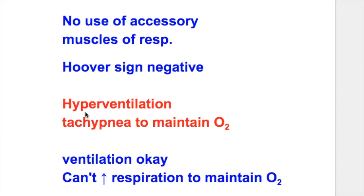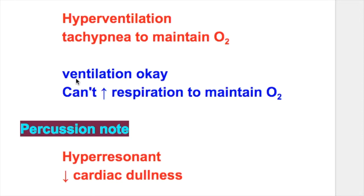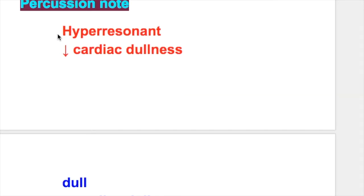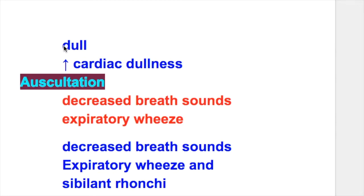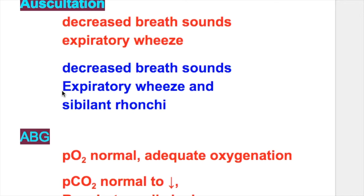The percussion note in emphysema is hyperresonant with decreased cardiac dullness. Whereas in chronic bronchitis the percussion note is dull with increased cardiac dullness. On auscultation, emphysema shows decreased breath sounds and expiratory wheeze. In chronic bronchitis, there are decreased breath sounds with expiratory wheeze and sibilant rhonchi.